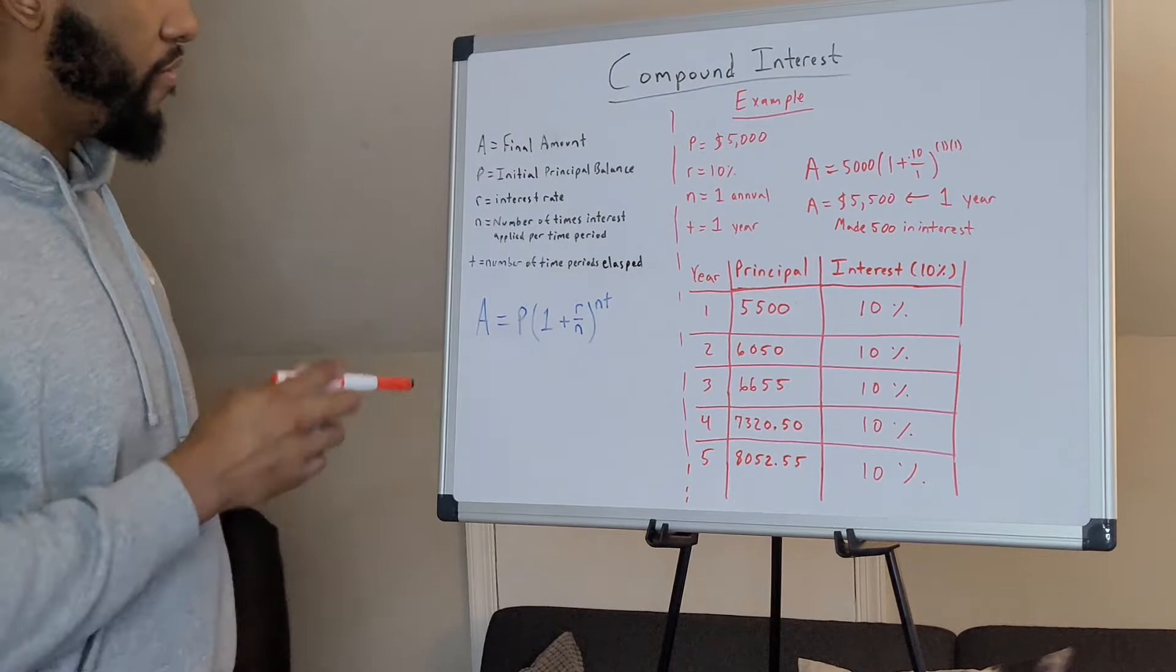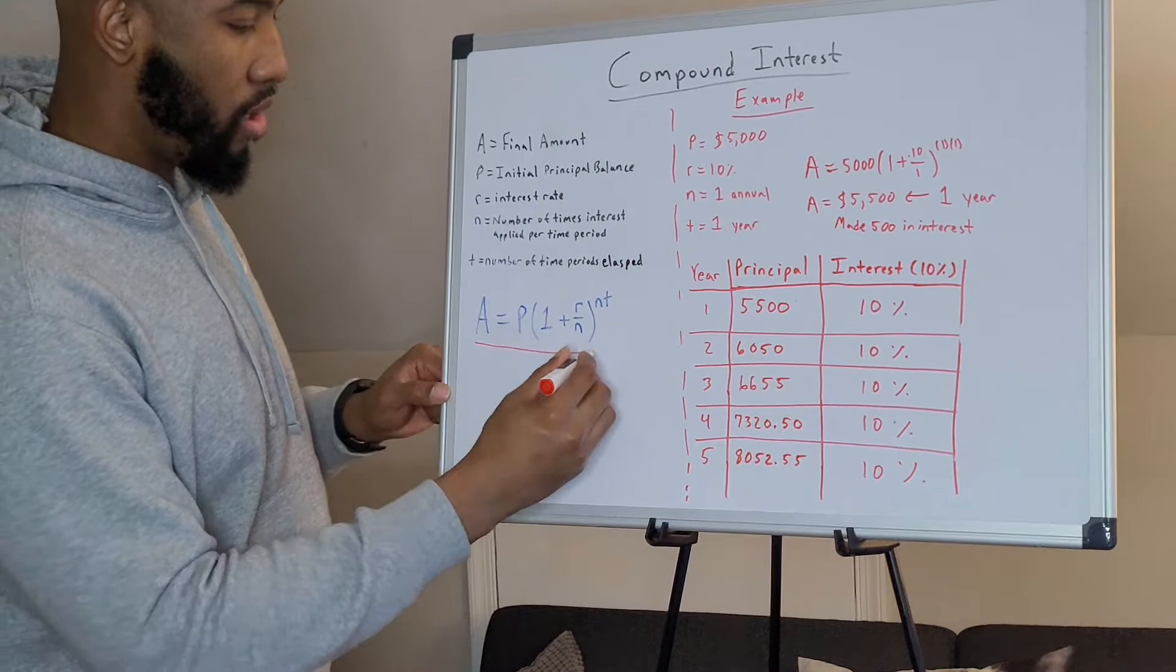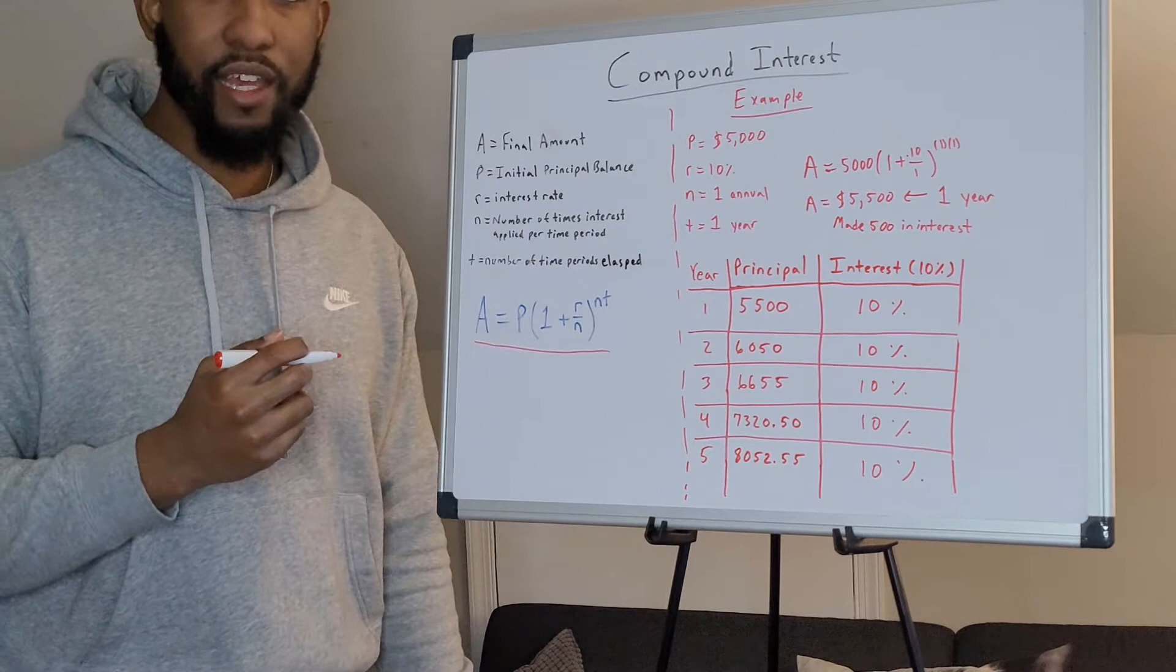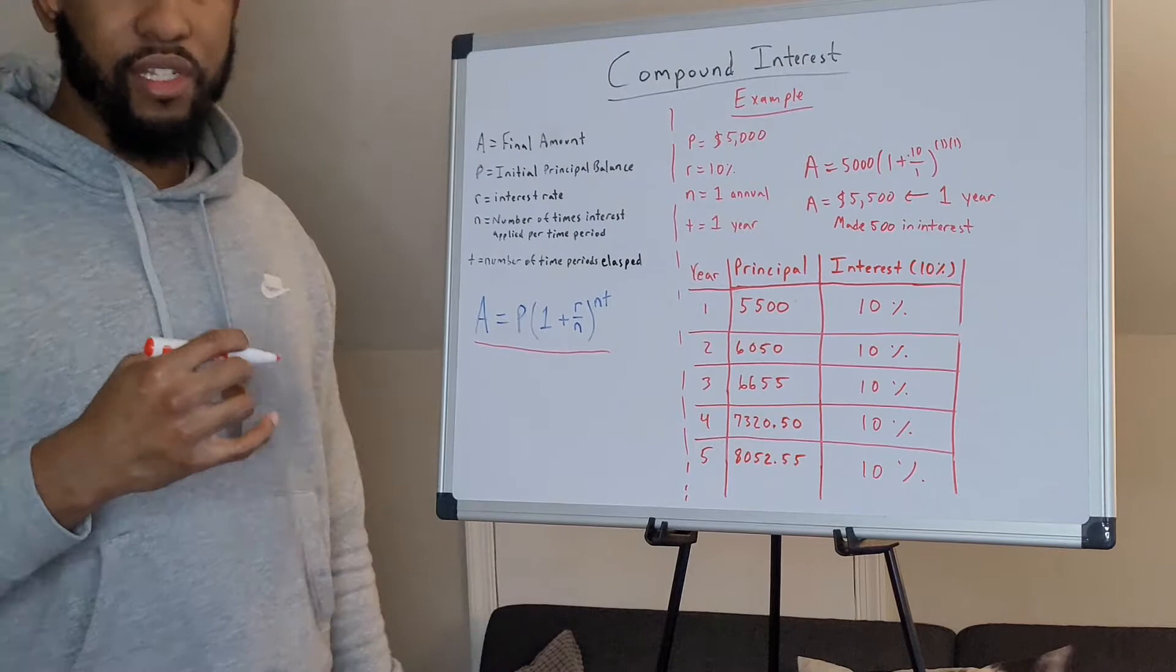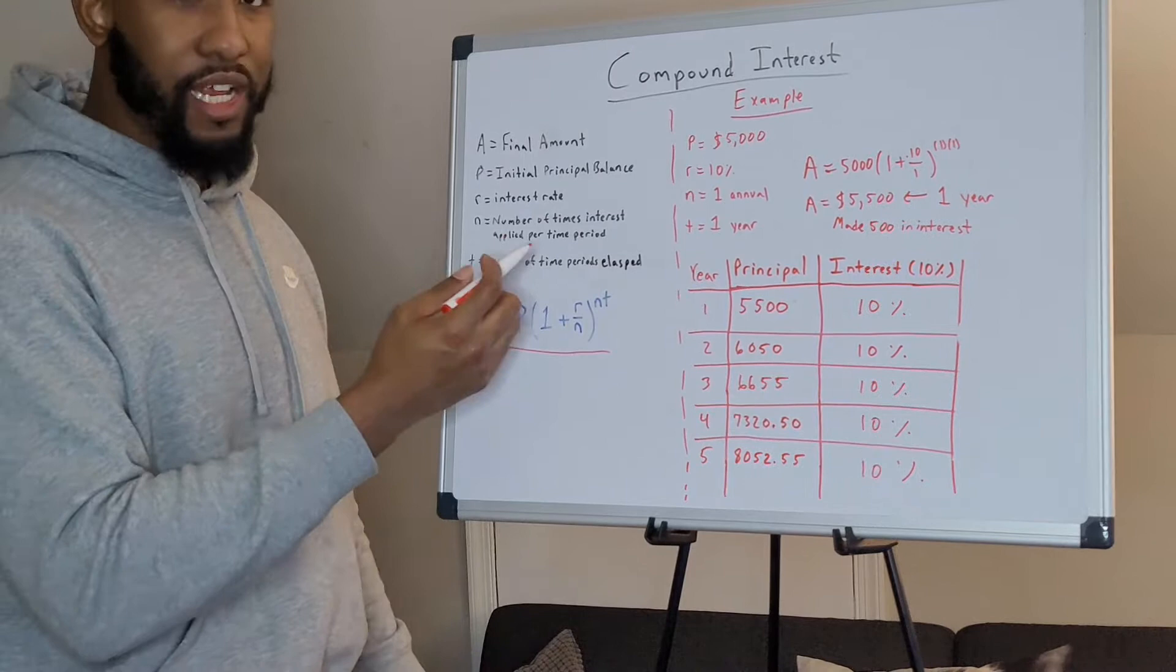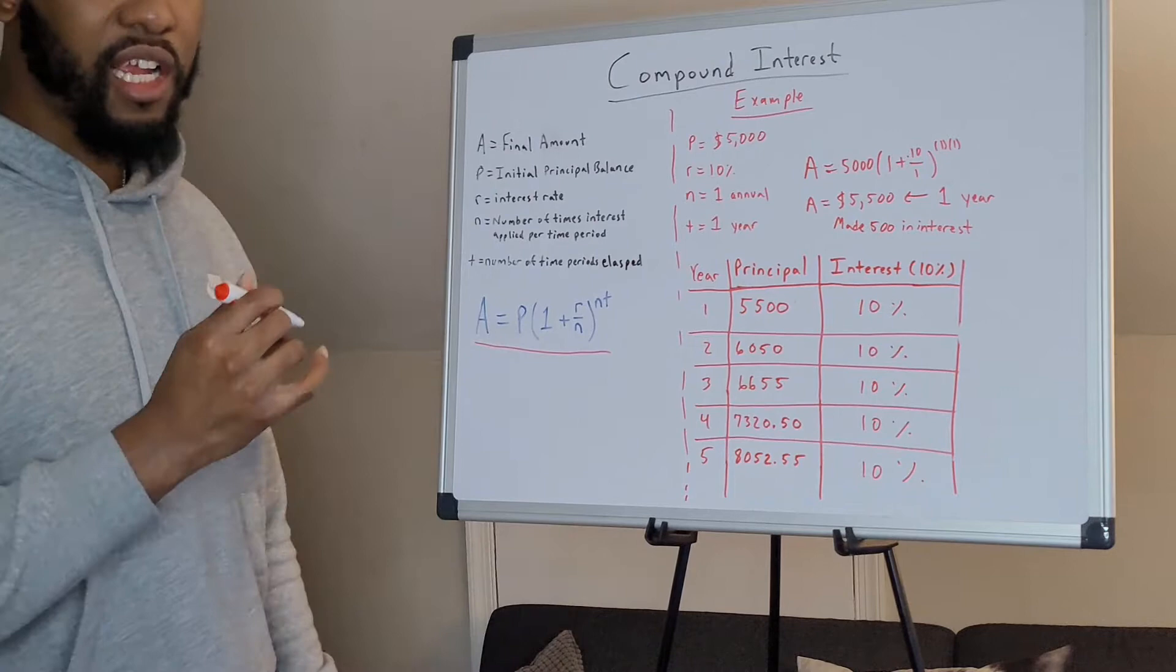Here are the different variables and components of what makes up the formula for compound interest down here in blue. A is for the final amount. P is for the initial principal balance. This is the money that you deposited into your asset to start accruing interest. R is the interest rate. This can be 5%, 10%, 1%, 0.5%. Depending on the type of asset that you are utilizing, your interest rate will vary. Then you have the number of times interest is compounded over a certain period of time.